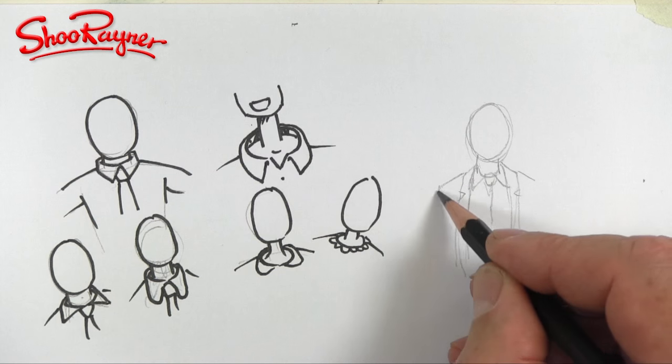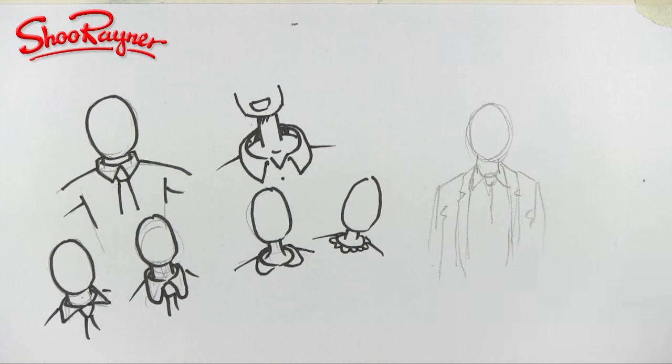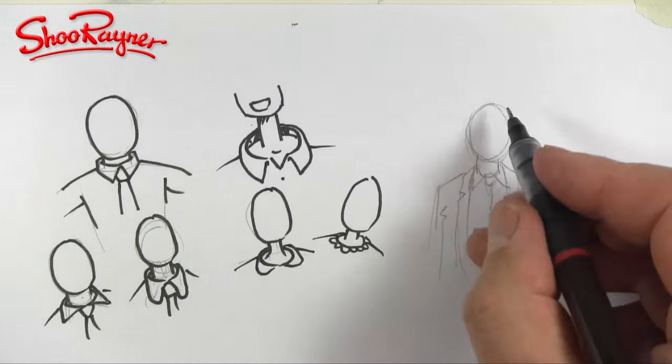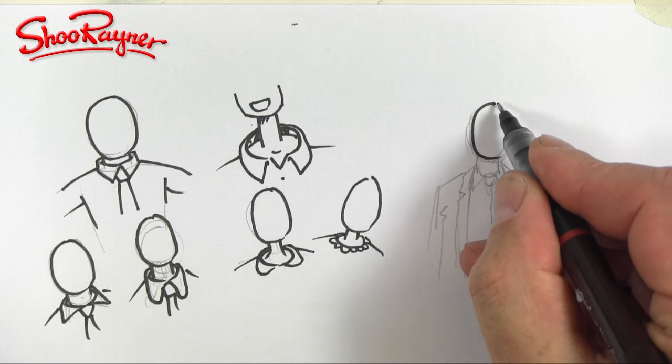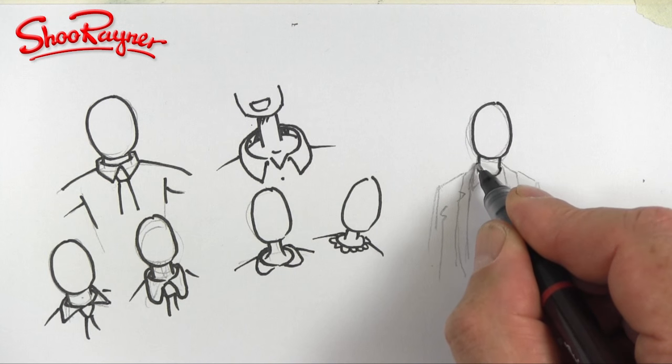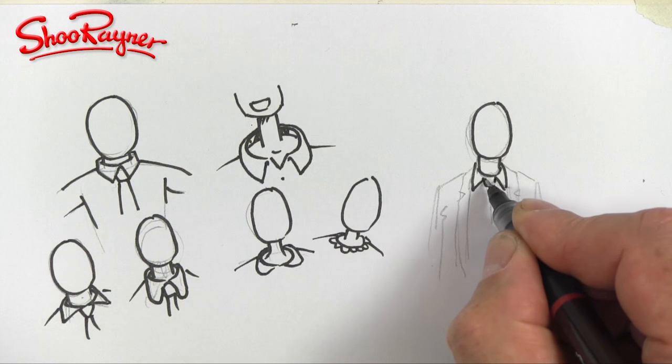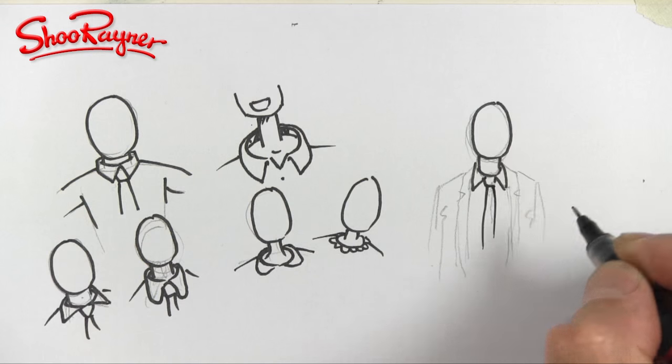This can then go down to the sleeves like that. So if we draw in the face and the neck and the collar and let's put the tie in there so we know exactly where we are.